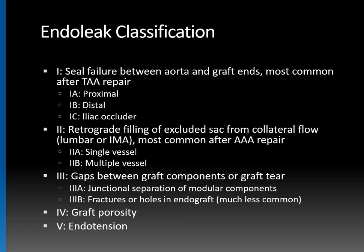Type 3b is when you have a fracture or a hole in the endograft, which is much less common than type 3a, which involves separation of the modular components. Type 3 endoleaks tend to be treated rather urgently because they will not resolve spontaneously, and usually additional stent graft components are placed across the defect.